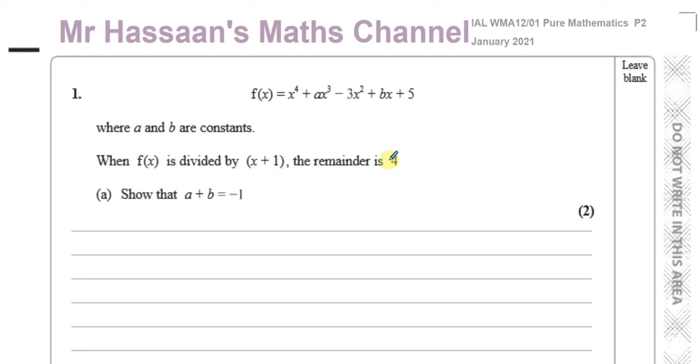Show that a + b = -1. By far the simplest way of solving a problem like this is to basically substitute whatever makes this bracket become 0 into this function, and that will give you what the remainder is.